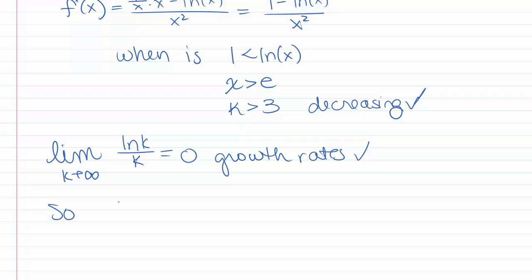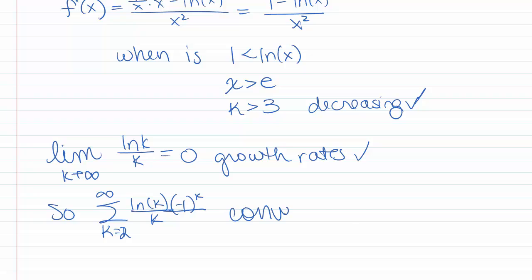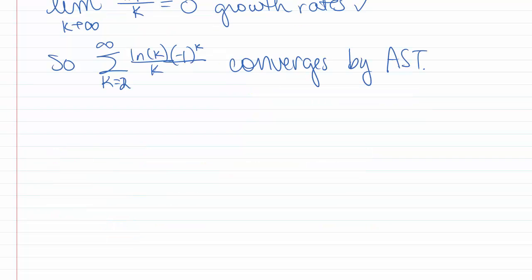We also want to see if the limit goes to 0. The limit as k goes to infinity of natural log of k over k — we know from growth rates that k grows faster than natural log of k, so that limit is 0. So the sum k goes from 2 to infinity of negative 1 to the k times natural log of k over k converges by the alternating series test.